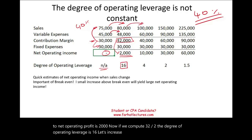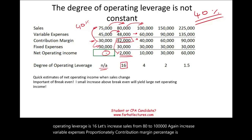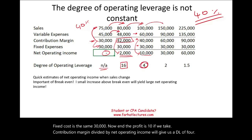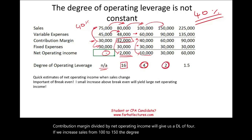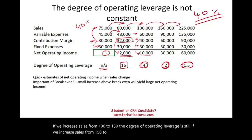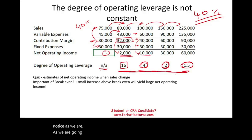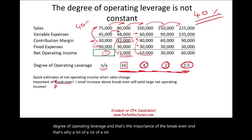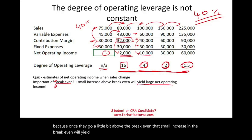If we increase sales from $80,000 to $100,000, with variable expenses rising proportionally and a 40% contribution margin, fixed cost remains $30,000 and profit is $10,000 — giving a DOL of 4. Increasing sales from $100,000 to $150,000 gives a DOL of 2. From $150,000 to $250,000, the DOL is 1.25. Notice that as we move further away from the break-even point, the degree of operating leverage gets lower and lower. That's why many managers want to reach break-even, because just above it, a small sales increase yields a much larger net operating income.